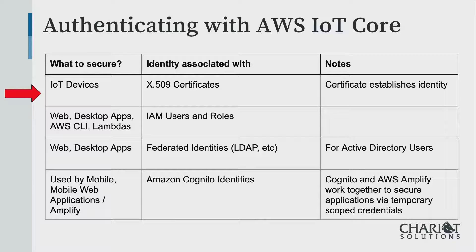You can also, from a programming perspective — if you're writing lambdas and want to configure and communicate with the server — use standard IAM users and roles. There's also the option of connecting through LDAP or through Cognito, their security system, from a mobile client. But for the IoT devices themselves, we're going to use X509 certificates.